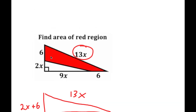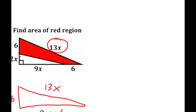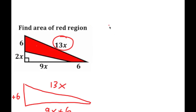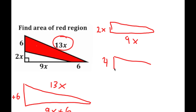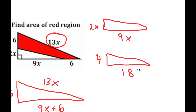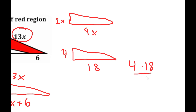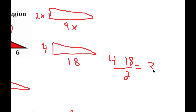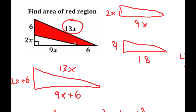We aren't done yet because we have to find the area of the red region. To do that, we'll find the area of the total region and subtract the area of the white region. The white region is the small triangle with legs 2x and 9x. With x equals 2, that's 4 times 18 over 2, which equals 72 over 2, which is 36.